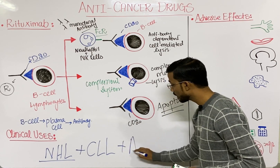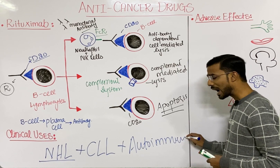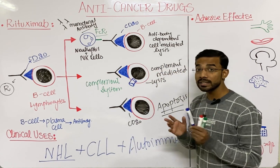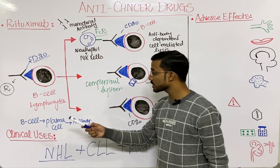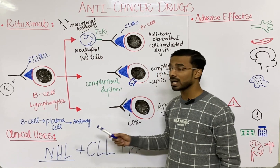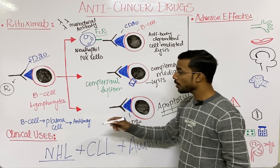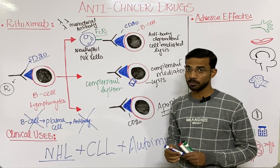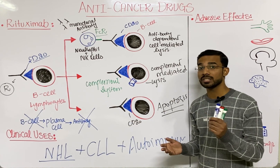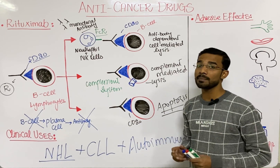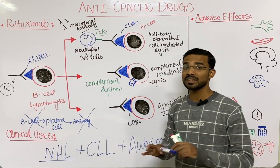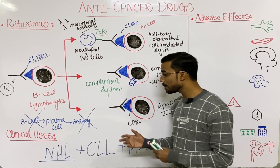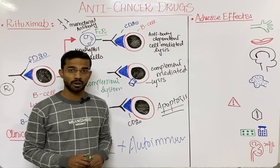Rituximab can also be used in different autoimmune conditions. Why? Because as discussed, B lymphocytes convert into plasma cells, and plasma cells form antibodies. When we stop or destroy the B cells, there is no production of antibodies. In autoimmune conditions, antibodies are the main factor that disturb normal body mechanisms. With no B cells, there are no antibodies and no disturbance caused by them.